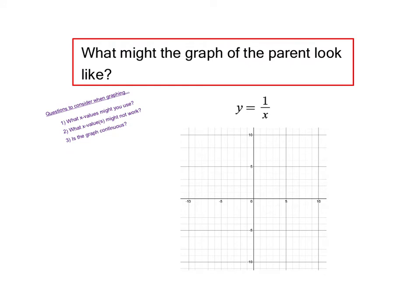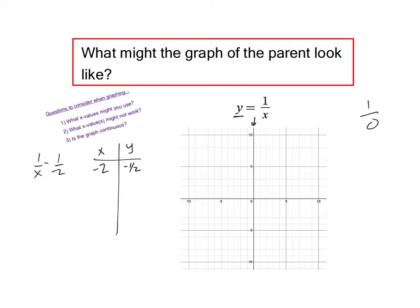So we look at what does this graph look like. You think about what values of x might we use. First of all, 1 over 0 is problematic because dividing by 0 is an undefined term. So there's going to be no part of this graph right along the y-axis. What would be nice to use are values that make the y term pretty clean. For instance, negative 2 for x gives a y value of negative 1 half, because it would be 1 over negative 2. Negative 1 is a nice clean one — 1 over negative 1 is just negative 1.